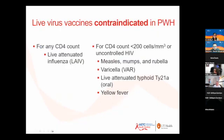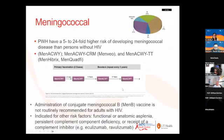Live viruses are contraindicated — live influenza for any CD4 count, and if the CD4 count is under 200 or there is uncontrolled HIV replication with high viral loads: MMR, varicella, live attenuated typhoid, and yellow fever if related to travel are all contraindicated.